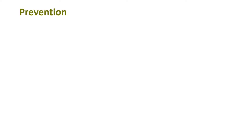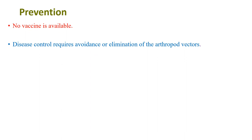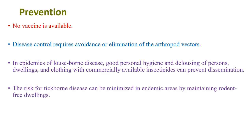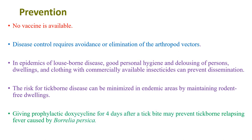Neonates have up to a 33% case fatality rate. Regarding prevention, there is currently no vaccine available to prevent relapsing fever. Disease control requires avoidance or elimination of the arthropod vectors. In epidemics of louse-borne disease, good personal hygiene and delousing of persons, dwellings, and clothing with commercially available insecticides can prevent dissemination. The risk for tick-borne disease can be minimized in endemic areas by maintaining rodent-free dwellings. Giving prophylactic doxycycline for four days after tick bites may prevent tick-borne relapsing fever caused by Borrelia hermsii.